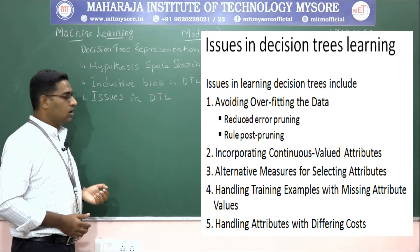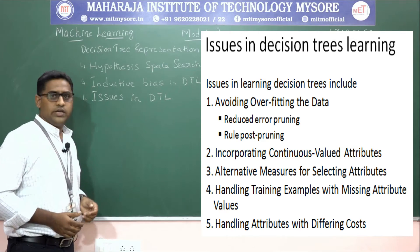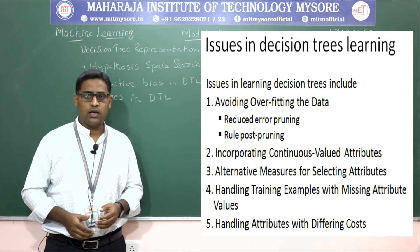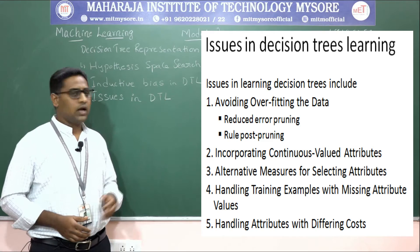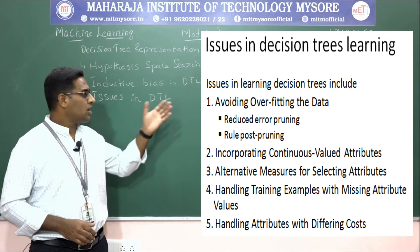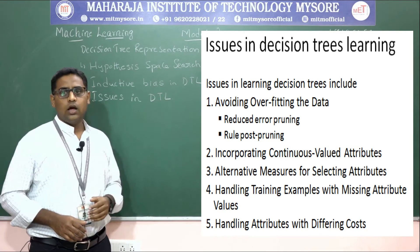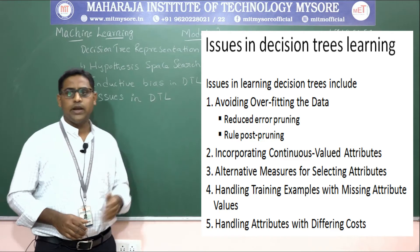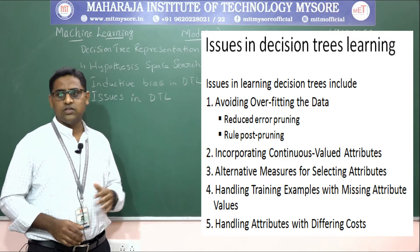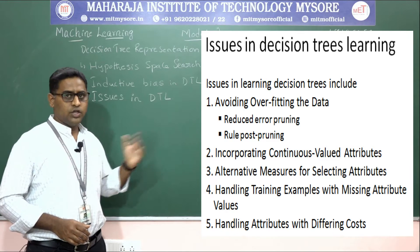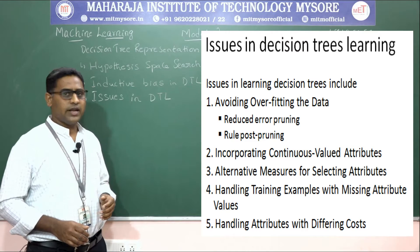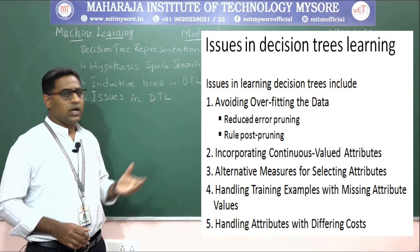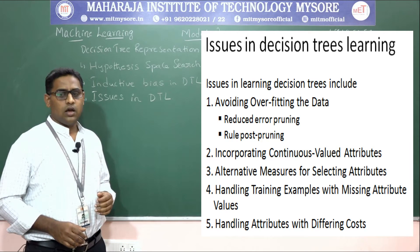The last part of decision tree representation covers issues in decision tree learning. There are five different issues: first, avoiding overfitting of the data using reduced error pruning and rule post pruning; second, incorporating continuous-valued attributes; third, alternative measures for selecting attributes; fourth, handling training examples with missing attribute values; and fifth, handling attributes with differing costs.